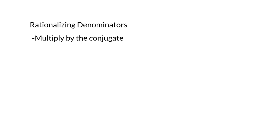Rationalizing denominators is a process of removing radicals from denominators of fractions by rewriting the fraction in a different way. The way that we rationalize denominators is we multiply by the conjugate of the denominator.